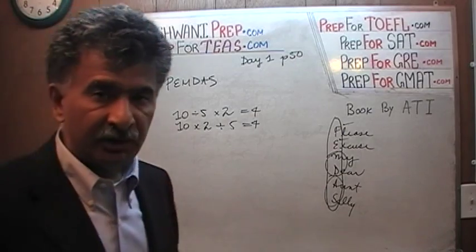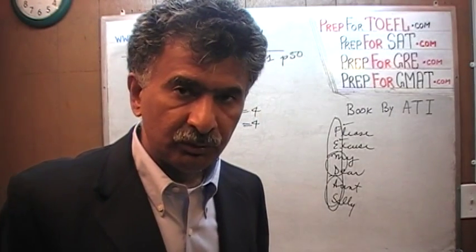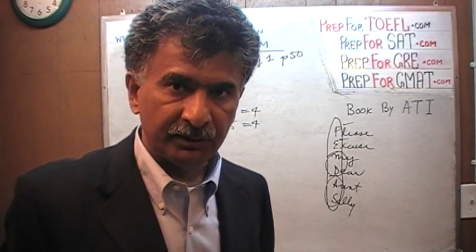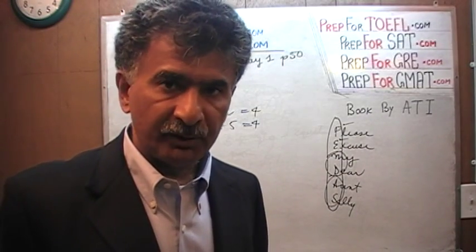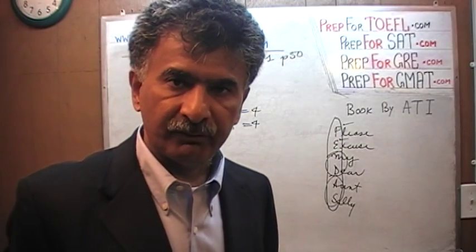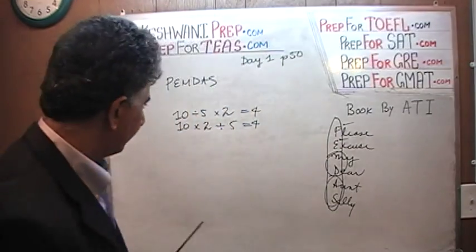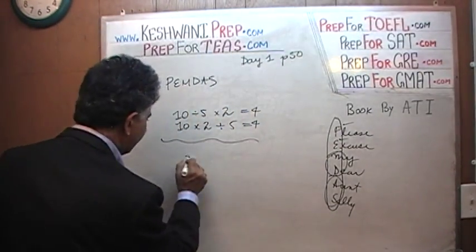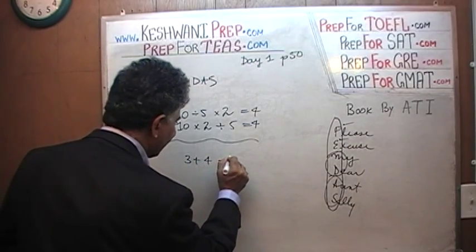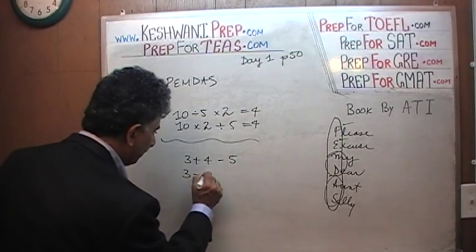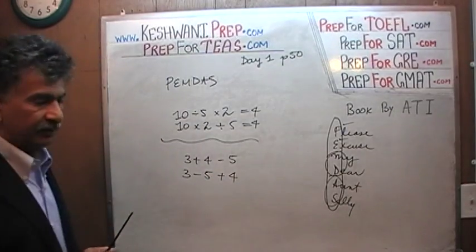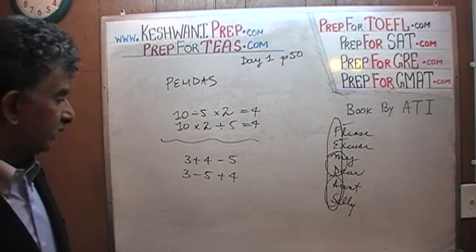So when you have multiplication and division, it doesn't matter which one you do first. Similarly, addition and subtraction have the same priority. The order does not matter whether you subtract first or add first. For example, 3 plus 4 minus 5 is going to give the same answer as 3 minus 5 plus 4. In both cases, we're going to get the answer of 2.